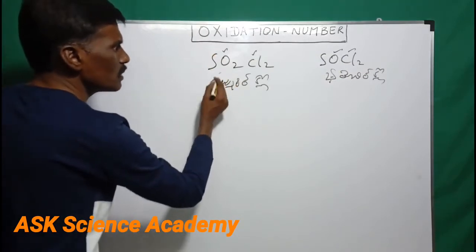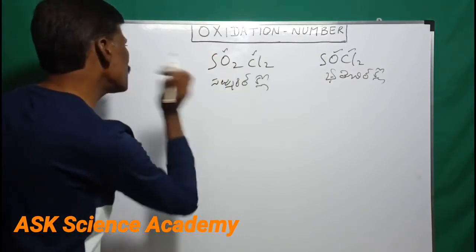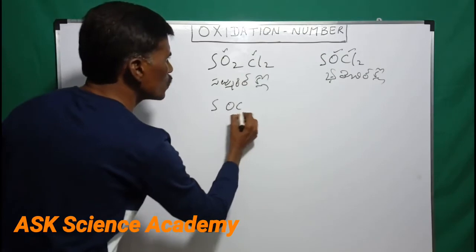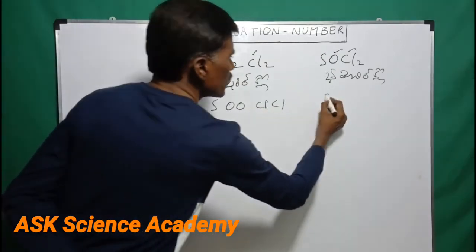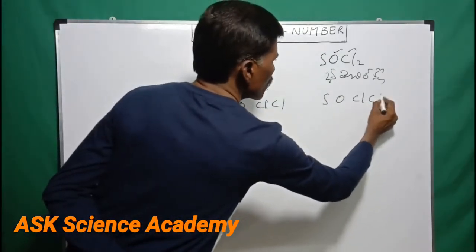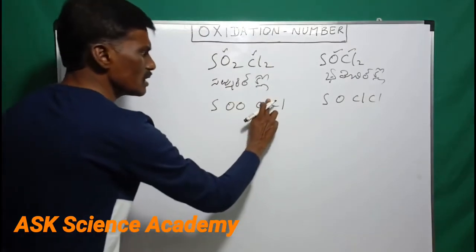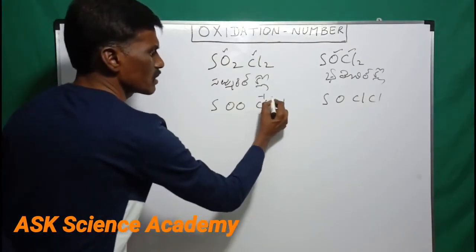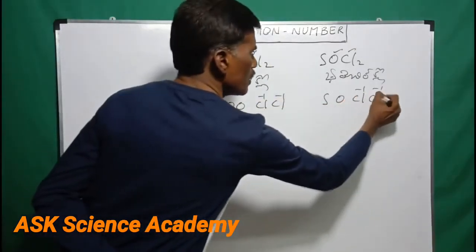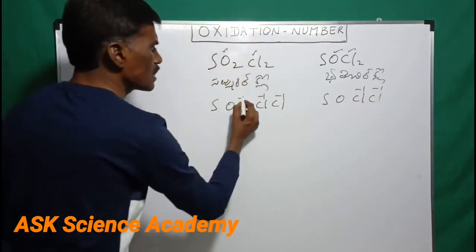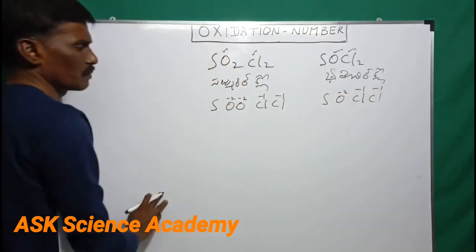If you take the sulfur, you have oxygen. Chlorine generally minus 1 is 7th group. Oxygen generally is minus 2.